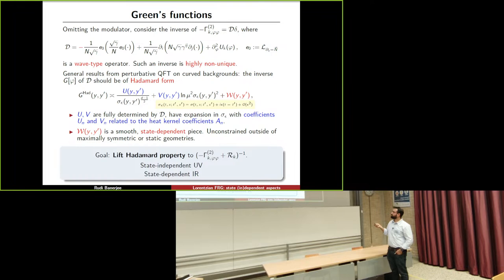On the other hand, the biscalar w is smooth and state-dependent — it's completely unconstrained outside of maximally symmetric or static geometries. The goal in defining this vacuum-like state for the FRG is to lift the Hadamard property to the modulated Hessian, which should lead to a state-independent ultraviolet flow but a state-dependent infrared flow. Going beyond the local potential approximation to the full FRG, one can see the state dependence at that level by making contact with perturbation theory, inserting the usual ℏ ansatz to get a recursive system of flow equations.